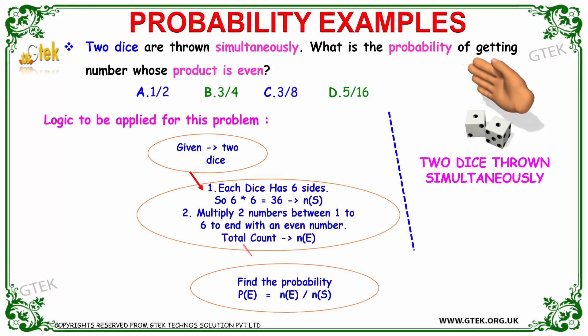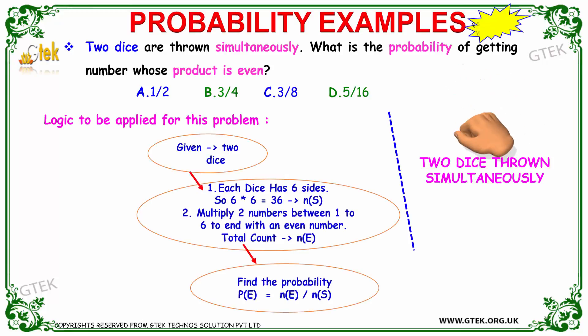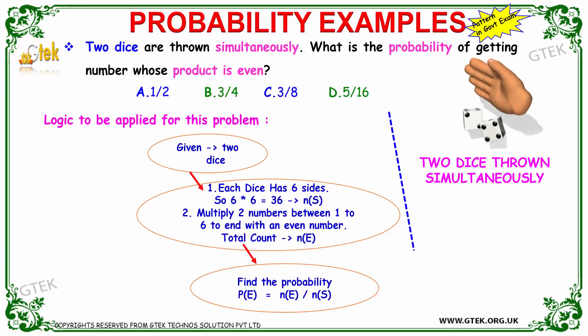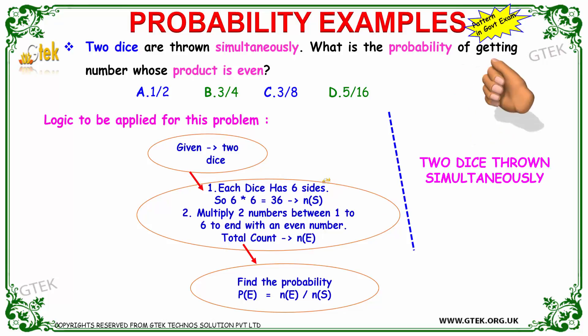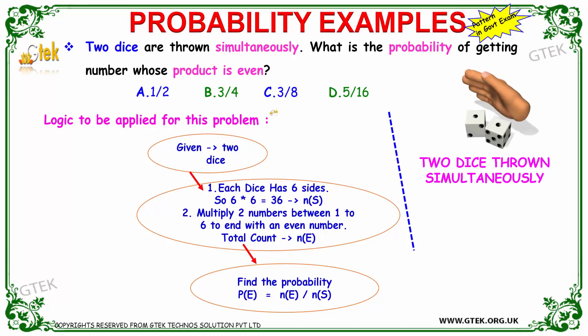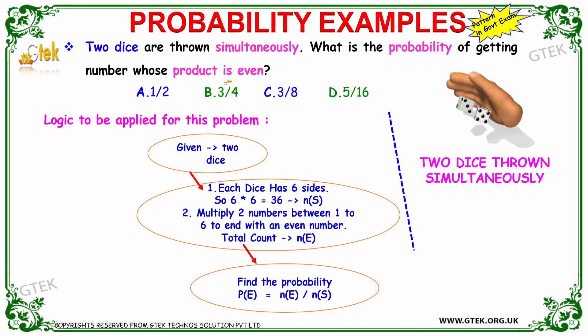Let's talk about a dice problem. Two dice are thrown simultaneously. What is the probability of getting a number whose product is an even number?